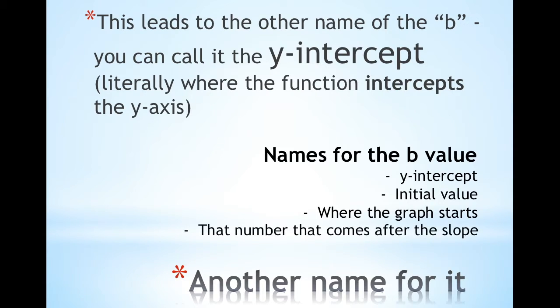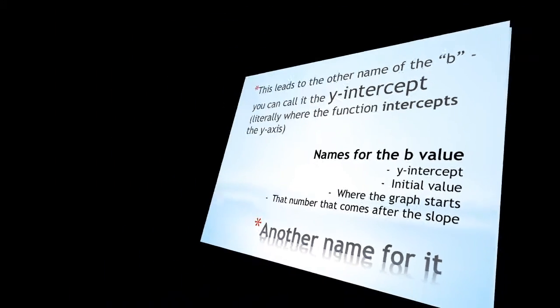You could say where the graph starts, or that number that comes after the slope. There are several names for the B value. As long as you know where it goes and how to find it, it really doesn't matter. You need to know how to identify it.